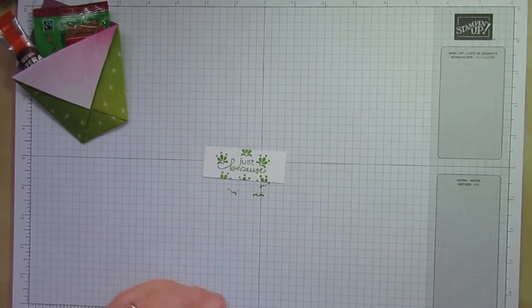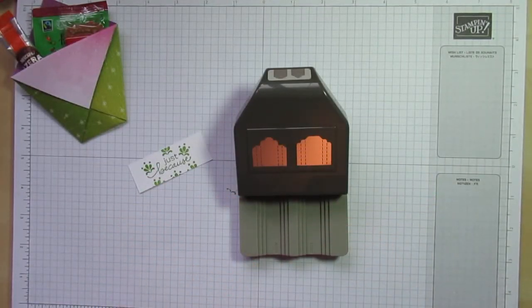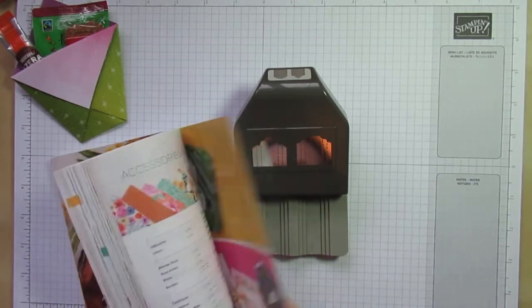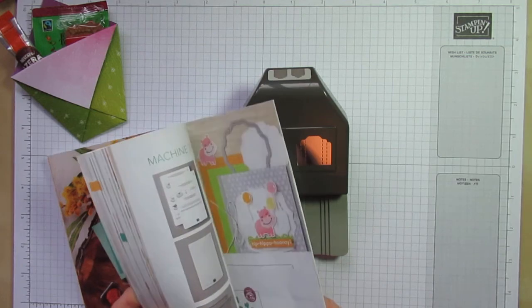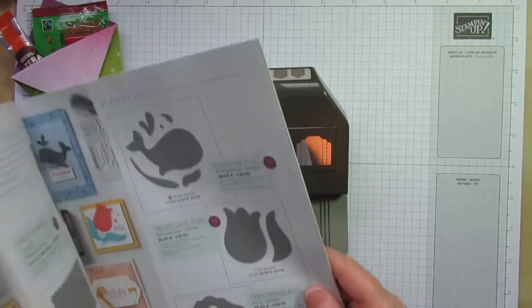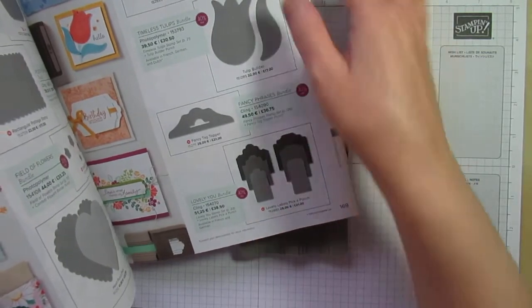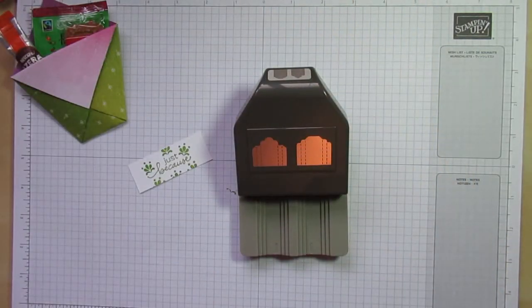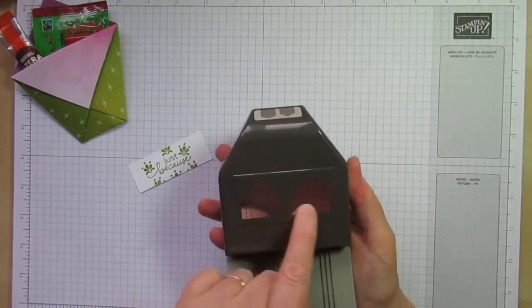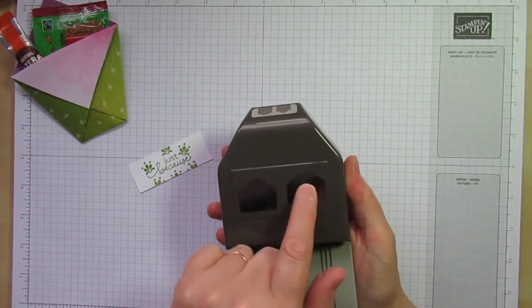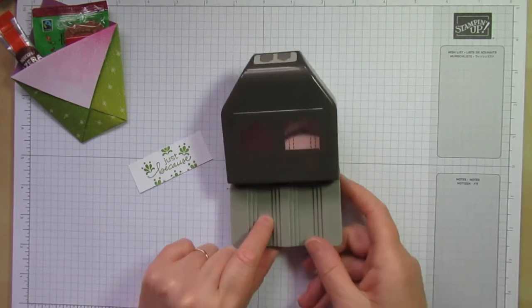So get the ink out of the way and then this is my lovely labels punch I think it is just let me remind myself in the catalogue. I'm still not remembering every single lovely labels pick a punch here it is here on page 169.